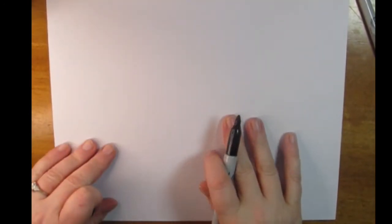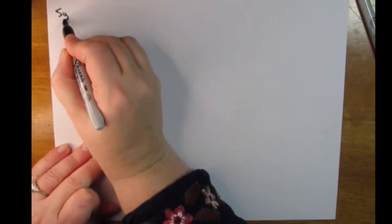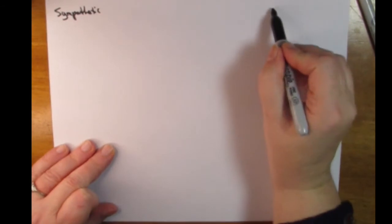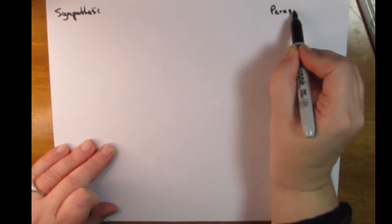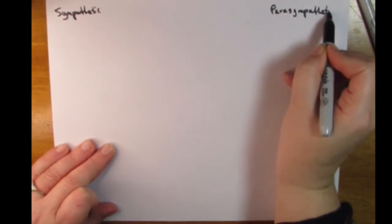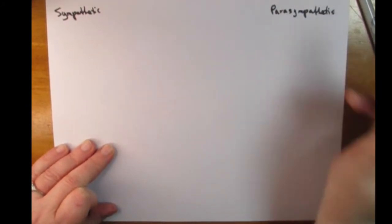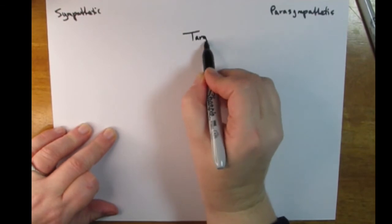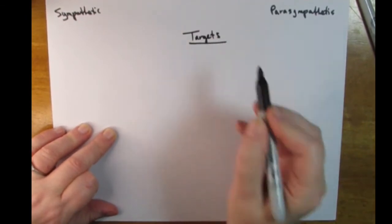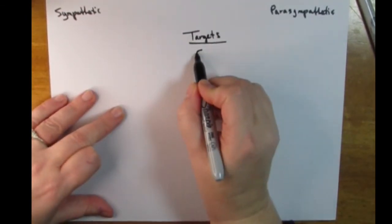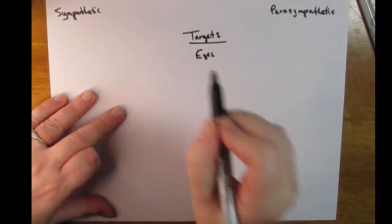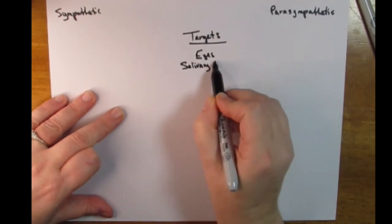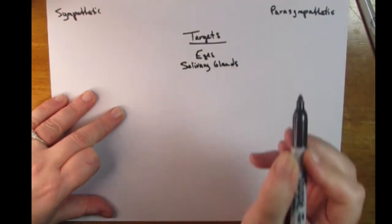On the left-hand side in the upper corner you're going to write 'sympathetic,' and on the right-hand side you're going to write 'parasympathetic.' In the center you're going to write 'target organs' or 'target structures' or 'target organ systems.' We're going to list out a decent number of them — not an exhaustive list — just enough to give you an idea of the types of structures that are targeted by the autonomic nervous system.